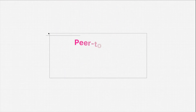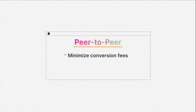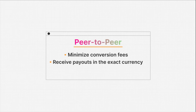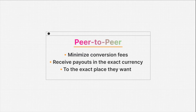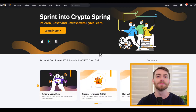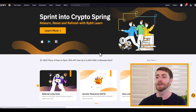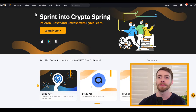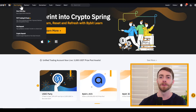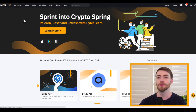Bybit ensures that both sides of the transaction are protected and everybody receives their funds. P2P trading is perfect for users who wish to minimize conversion fees and receive payouts from crypto into the exact currency and exact place they want. It offers the flexibility of trading crypto for over 50 different fiat currencies, paying out to over 400 banks and payment methods. Now it's time to sell our very first cryptocurrencies via peer-to-peer trading. Head on over to Bybit.com and under the top navigation panel, under Buy Crypto, we can select P2P trading.